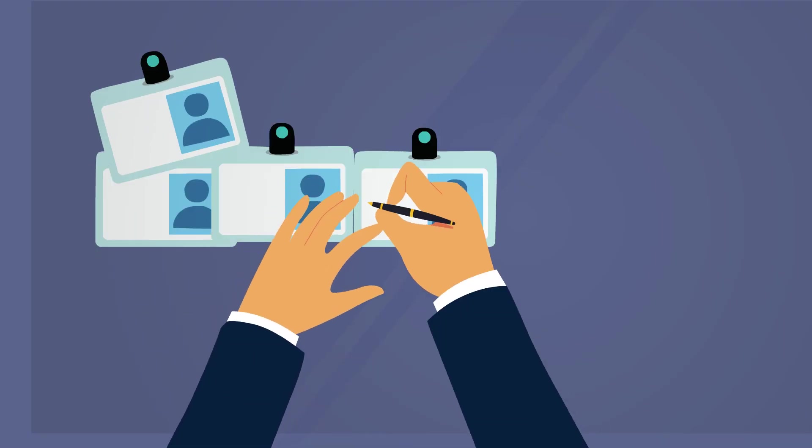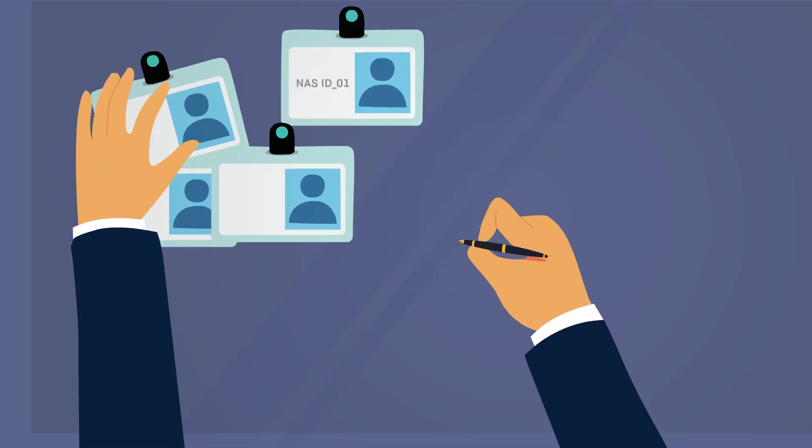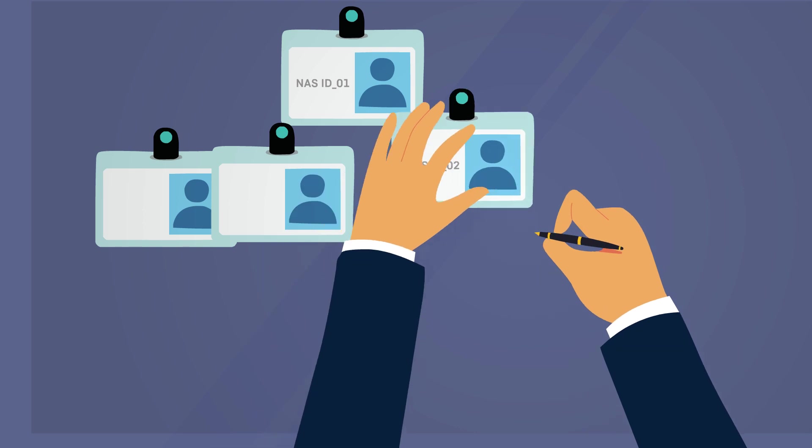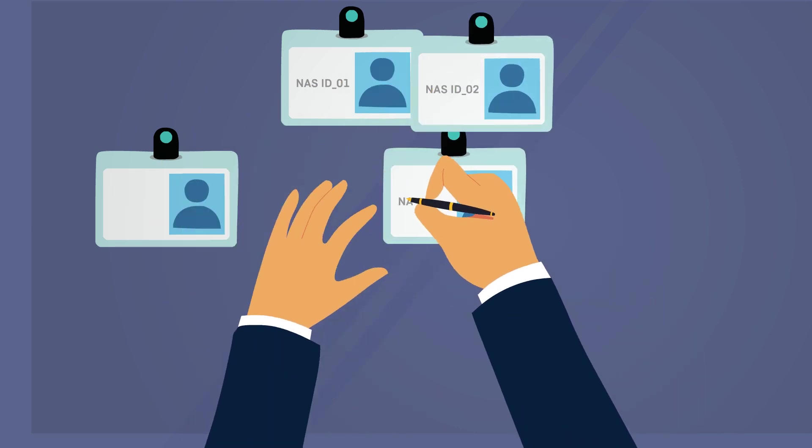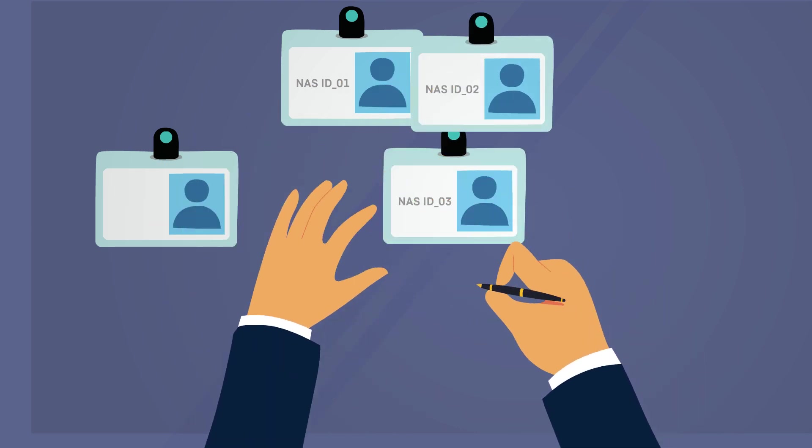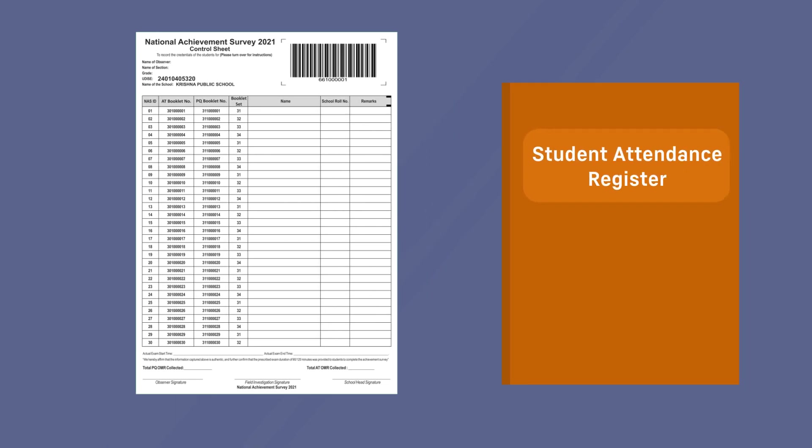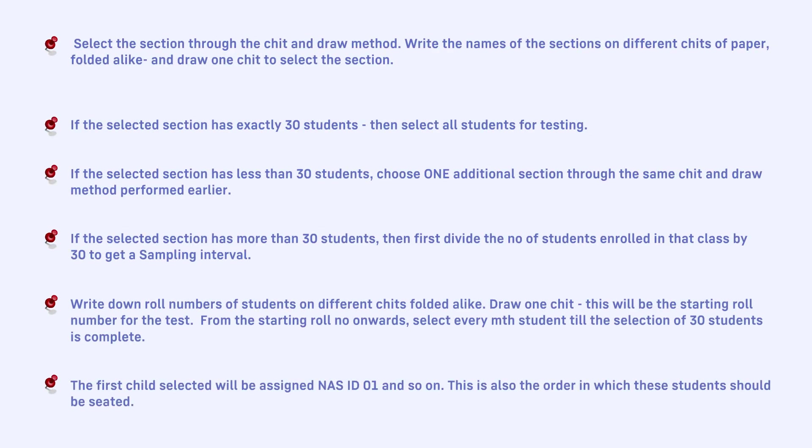The first child selected after the sampling is complete will be assigned NASID 01 and so on. This is also the order in which these students should be seated. Update the control sheet accordingly with help of the student attendance register. With this, you have successfully completed your module for understanding sampling.